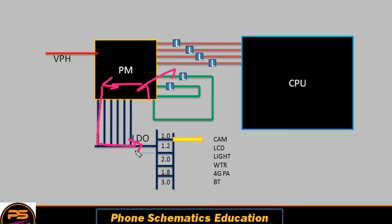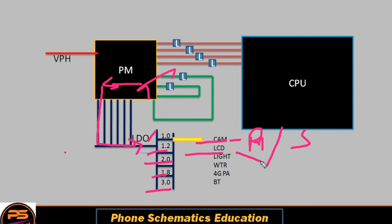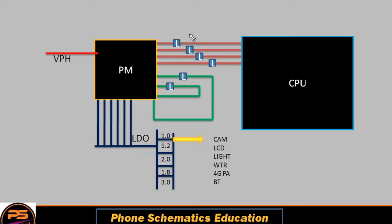After these lines go back to the power IC, the power IC creates LDO voltages: 1.0 V, 1.2 V, 1.8 V, 2.0 V, 2.6 V, 3.0 V — there are many LDOs created by the power IC. These LDOs go to each and every section: primary camera, secondary camera, LCD IC, light IC, WTR IC, 4G PA, Bluetooth, audio — every IC needs an LDO voltage to enable it.